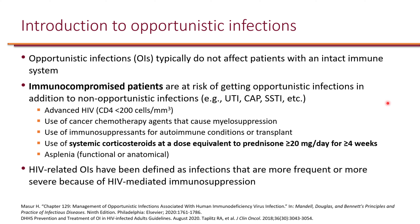Which patients are considered immunocompromised? In general: advanced HIV, meaning a CD4 cell count of less than 200; cancer patients receiving chemotherapy that causes myelosuppression, including neutropenia; and those who receive immunosuppressant therapy for either autoimmune conditions or transplant.